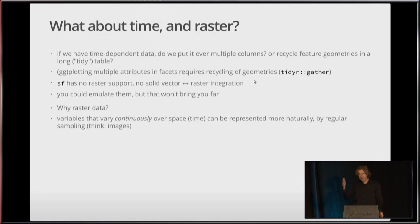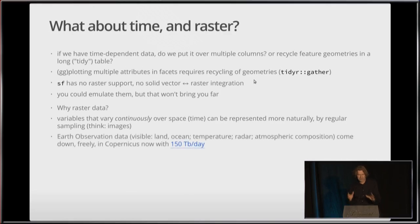Why raster data for those not involved in the raster world? Well, variables that vary continuously over space or over time are typically represented more naturally by regular sampling. So think images do that, still images or video, but also earth observation data. Satellite data, we have now visible satellites that give information about land, ocean, temperature, radar satellites. We have satellites that measure atmospheric composition, and these all come down freely now. Europe is here clearly on the ball at the moment in the Copernicus program where they have like a little bit less than 10 satellites now running. It comes down with 150 terabytes per day. So that's quite a bandwidth, the data sets that you can have access to.